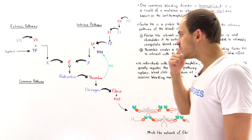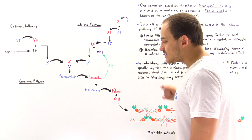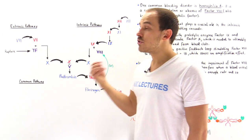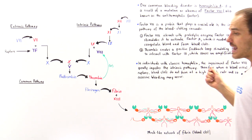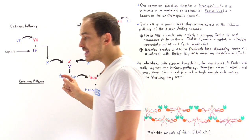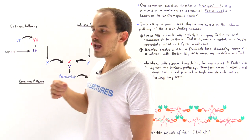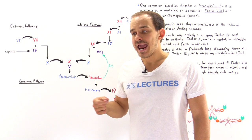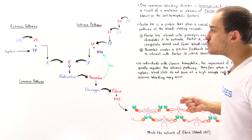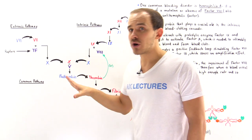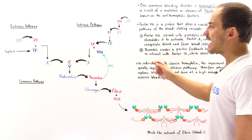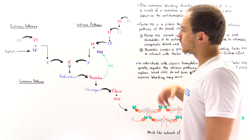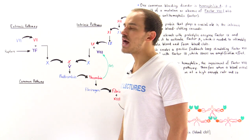Hemophilia A is a sex-linked recessive trait, which is why male individuals are those who typically have and express hemophilia A. A heterozygous female who carries one dominant and one recessive allele will not express the condition because the dominant trait overpowers the recessive one — she will still carry the gene to produce fully functional factor VIII, the anti-hemophilic factor responsible for completing the intrinsic pathway.